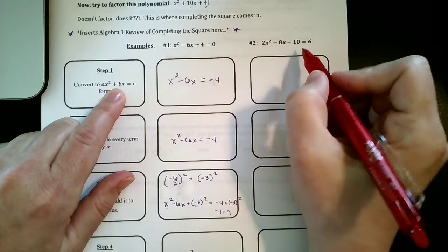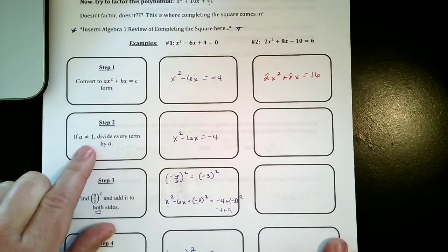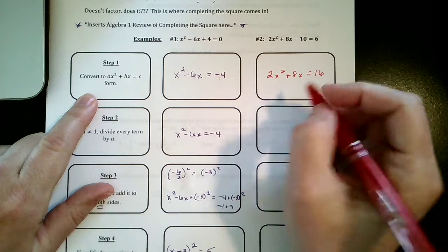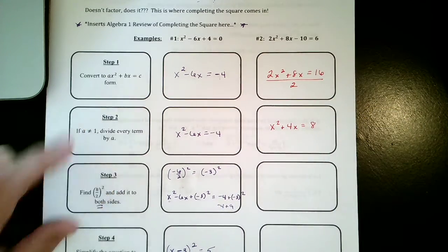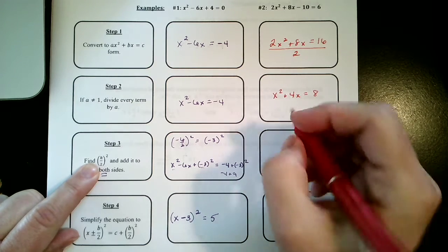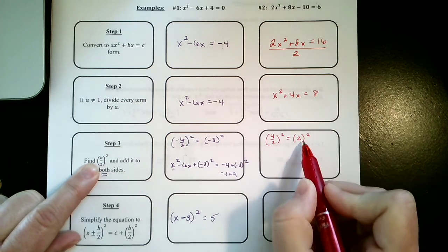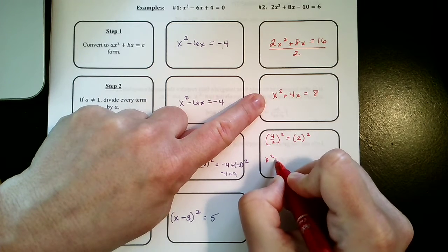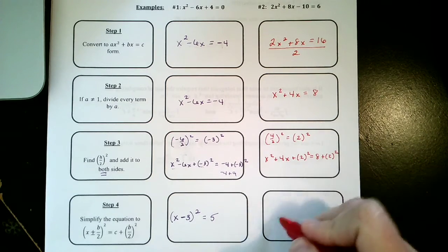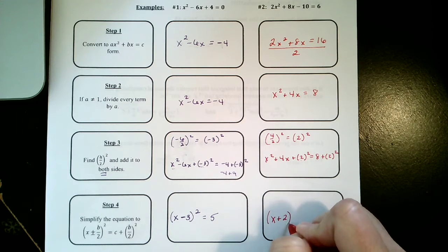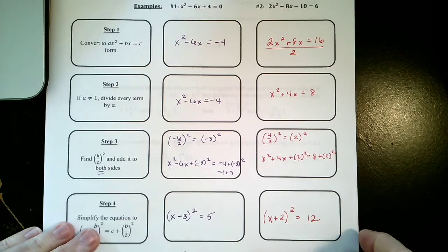We have to start off by moving the constant term over so I get 2x² + 8x = 16. If a is not equal to 1, divide every term by a, so I'm going to divide everything by 2. That gives me x² + 4x = 8. Next I'm going to take half of b and square it, so b is 4, so (4 divided by 2)² which is (2)². This gives me x² + 4x + (2)² = 8 + (2)². This factors to (x + 2)² = 8 + 4 which is 12.